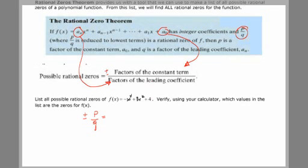P's come from the constant term here, 4. All the factors of 4 will go on the top, and all the factors of the initial term, actually it's negative 1, but we'll just take it as 1, all those factors will go on the bottom.